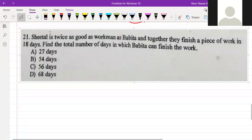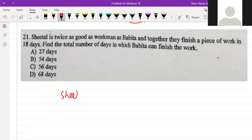This is Shital and this is Babita. Shital is twice as good as Babita. If Babita works X, Shital does double work, 2X. The work ratio is double, 1 is to 2.